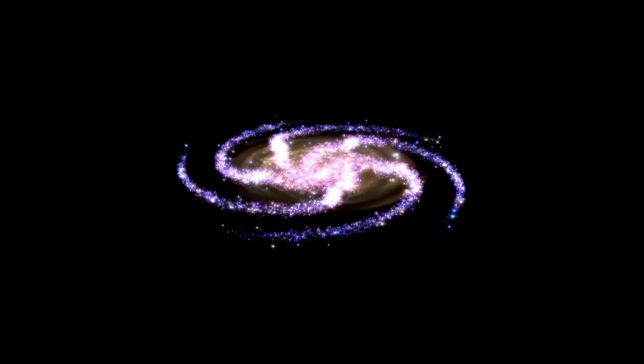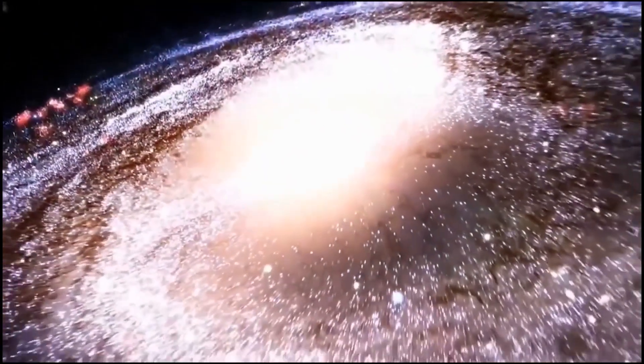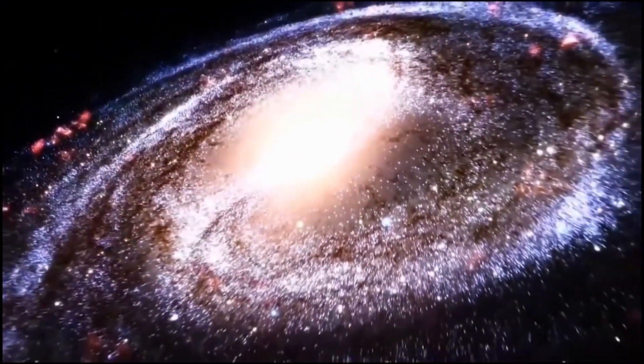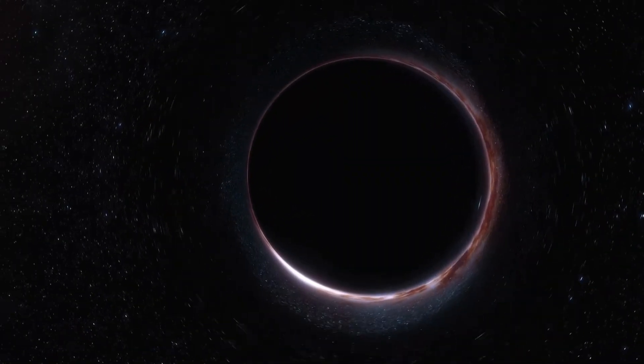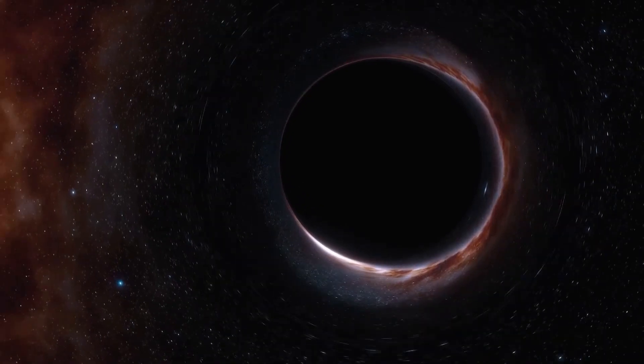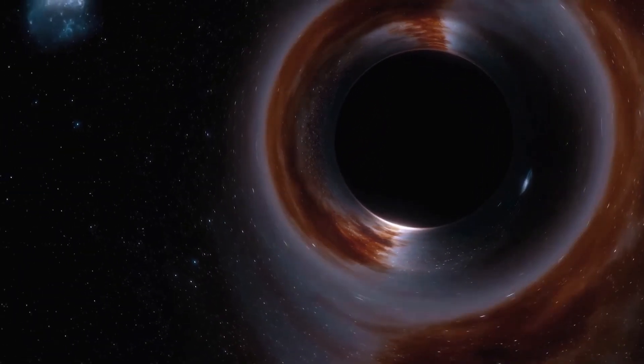The black hole at the heart of CEERS 1019 is about 9 million solar masses. This may seem tremendously massive, but many supermassive black holes can be billions of times the mass of our star. However, even at this relatively minute size...